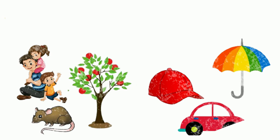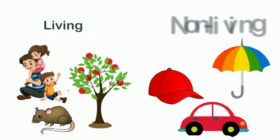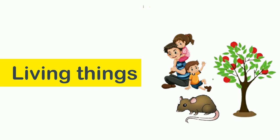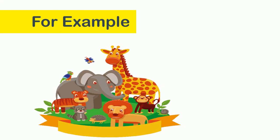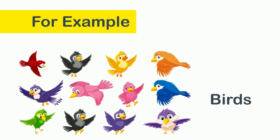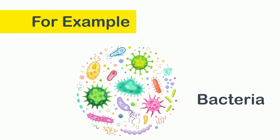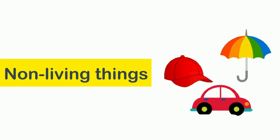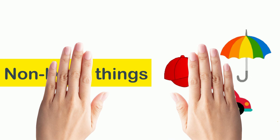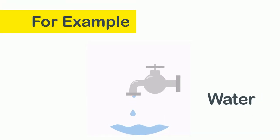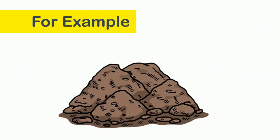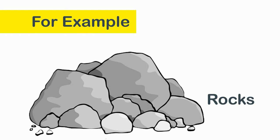There are two types of natural things: living and non-living. Living things are those which are alive, for example humans, animals, birds, insects, trees, bacteria, etc. And non-living things are those which are not alive, for example water, sunlight, soil, rocks, etc.